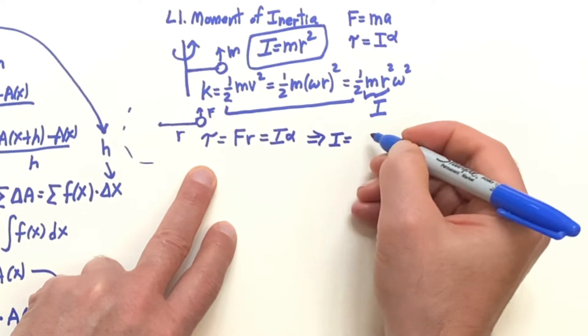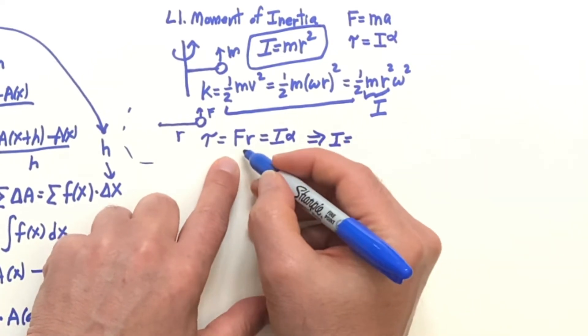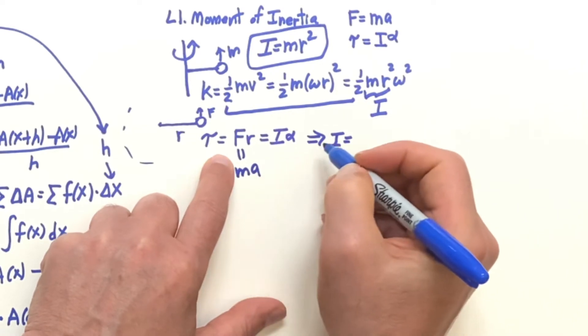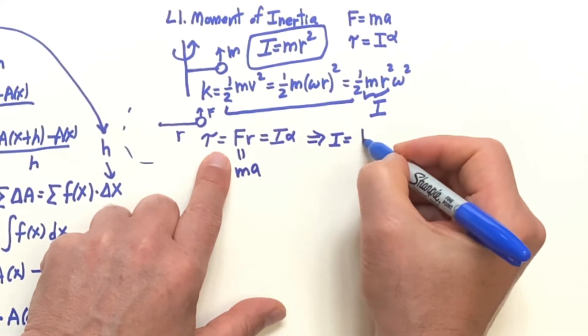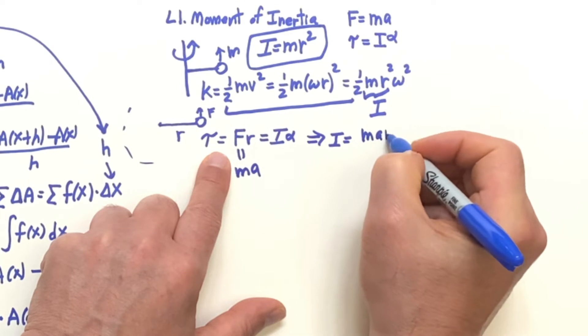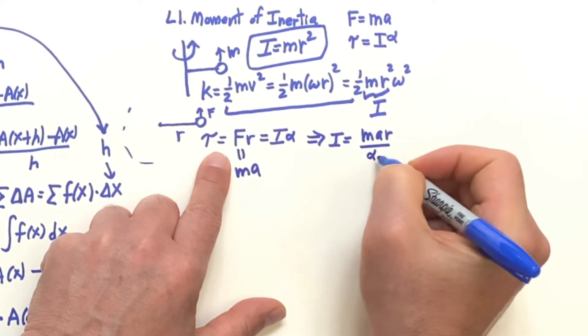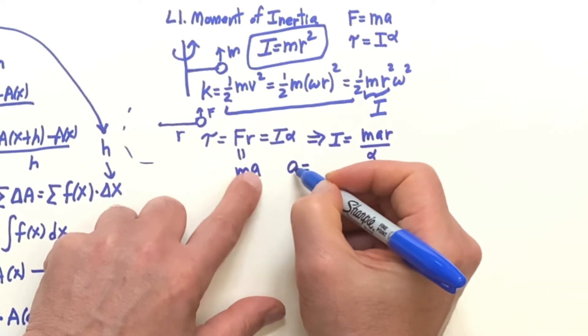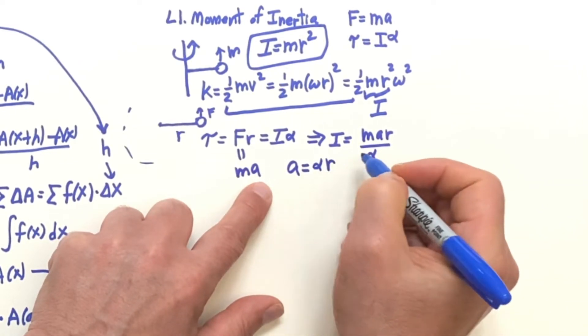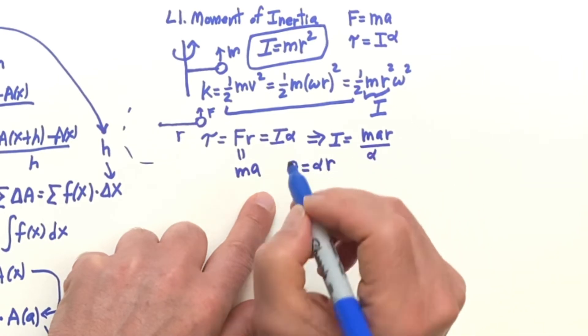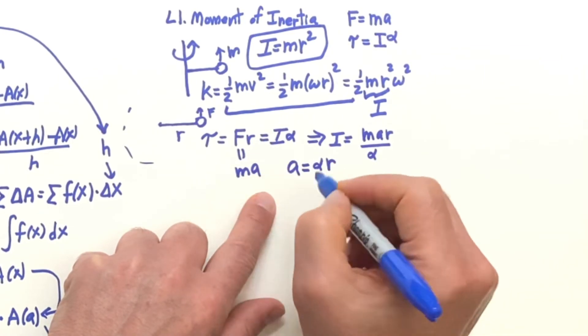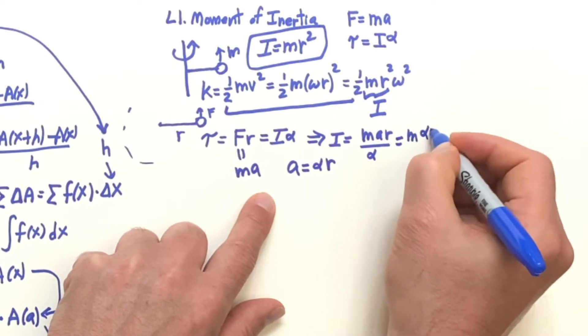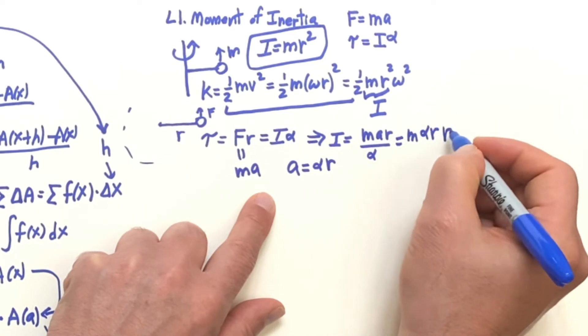I is equal to, F is equal to M A. So this is going to be M A R over alpha. But remember that A is alpha R. That's how you relate the tangential to the angular. And if you do that, you get M alpha R for the A times R.